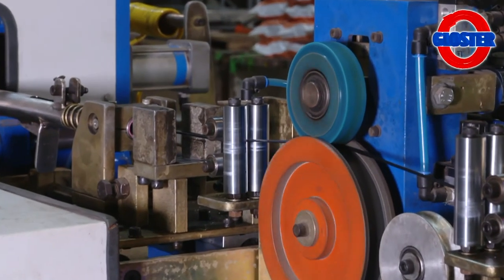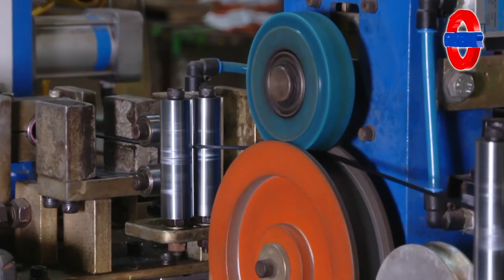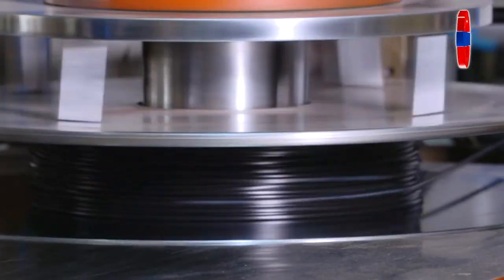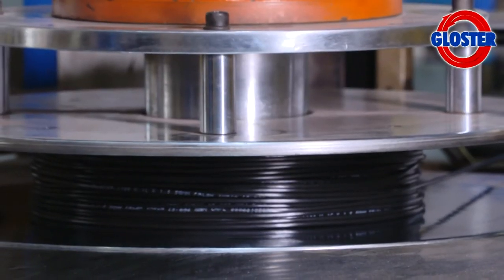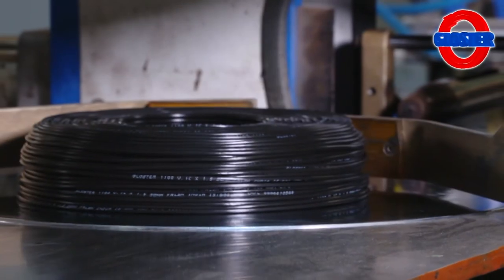The next stage after PVC insulation is coiling. Coiling is done in line with length preferences by customers using an automated computerized coiling machine with inductive sensor.